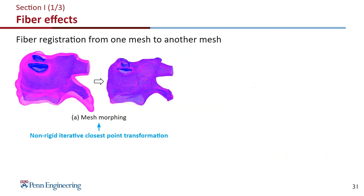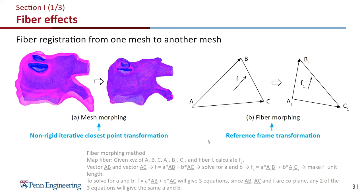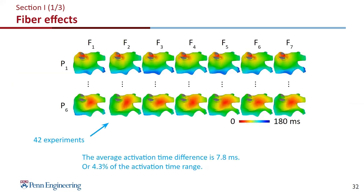This is how we do fiber registration. We first apply a rigid iterative closest point transformation to transform one mesh to another — the magenta mesh is transformed to the shape of the blue mesh. Then we apply a reference frame transformation to correct the 3D fiber vectors. Here are the results: for each row we show the same arrhythmia simulation with different fibers (fiber 1 through 7). We can see that all results within the same row are very similar — the average activation time difference is just about 7.8 milliseconds, or 4.3% of the entire activation time range.